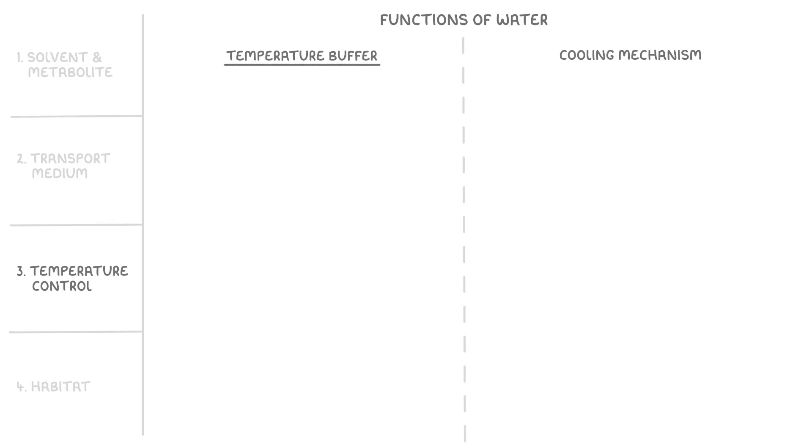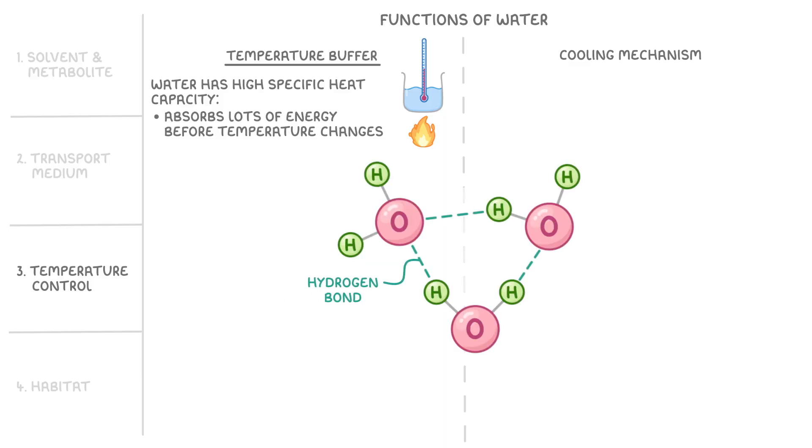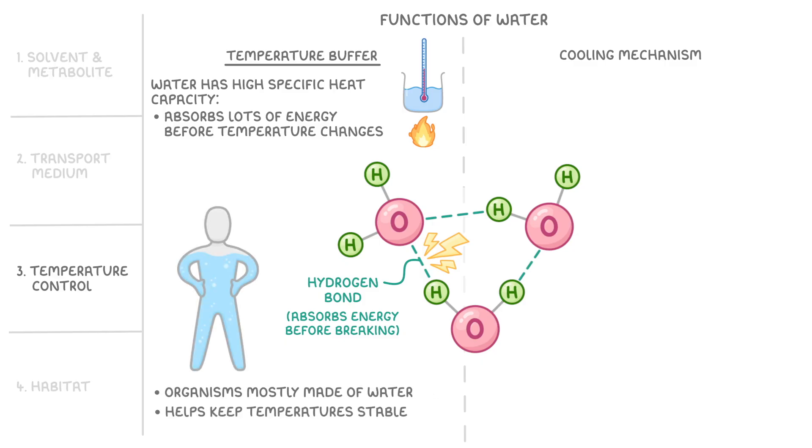Starting with how it acts as a temperature buffer, this is because water has a high specific heat capacity, which means that it absorbs a lot of energy before its temperature changes. This is because each hydrogen bond absorbs energy before breaking, and there are lots and lots of hydrogen bonds in water. As organisms are mostly made of water, this property helps keep their temperature stable.